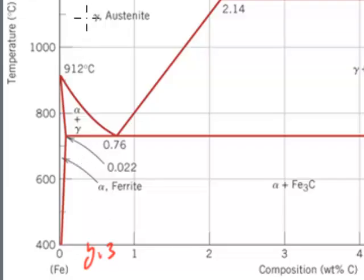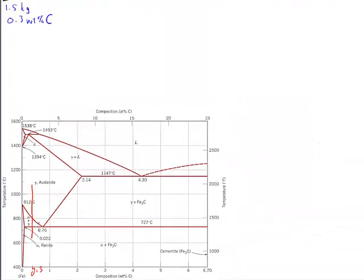We started with austenite labeled gamma, cooled through the alpha plus gamma range to this line, which is the eutectoid point. Now eutectoid means it's eutectic-like. So what's eutectic?